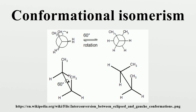Conformational isomers exist in a dynamic equilibrium, where the relative free energies of isomers determines the population of each isomer and the energy barrier of rotation determines the rate of interconversion between isomers. The equilibrium constant is related to the difference in free energy between the two conformers in kcal/mol, R is the universal gas constant, and T is the system's temperature in Kelvin. At a free energy difference of 0 kcal/mol, this gives an equilibrium constant of 1, meaning that two conformers exist in a 1:1 ratio.